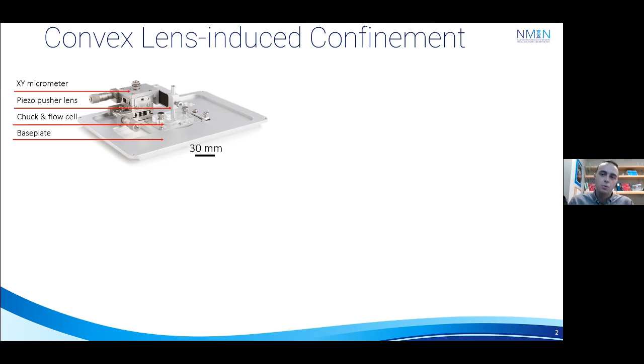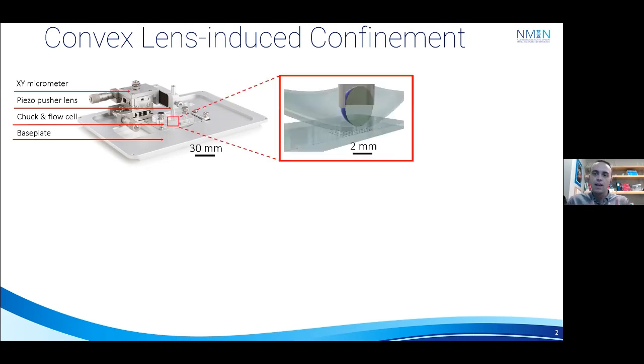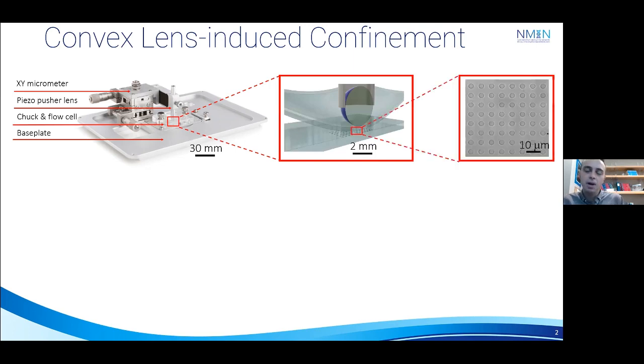And to explain how it works, I'll just zoom in on the two most important components, the flow cell and the pusher lens. And so first we flow our molecules of interest into the flow cell. And then using the pusher lens, we compress the top cover slip into the bottom cover slip. And so if I zoom in further on the bottom cover slip, you'll see that the molecules will become confined within these nanoscopic features etched into the bottom of the flow cell.